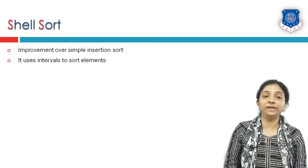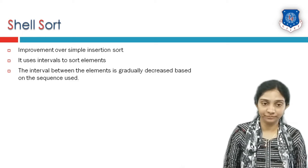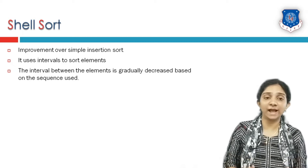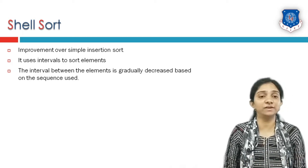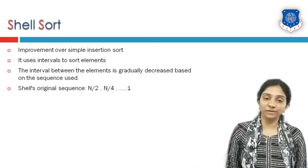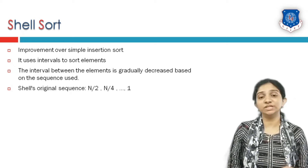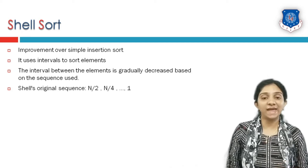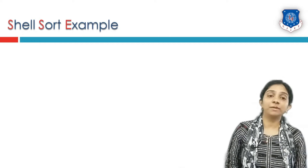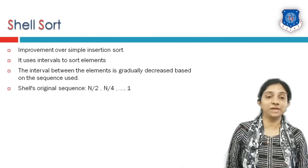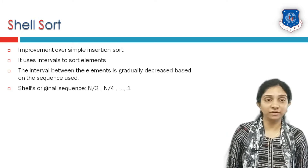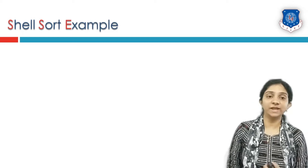Shell sort uses intervals between elements to sort them. The interval is gradually decreased so that at the end the complete list will be considered as one sequence of elements. Shell sort's original sequence is n/2, which is then reduced to n/4, then n/8, unless and until it becomes n/n which equals 1. Various other sequences do exist, but here we will consider only the original sequence to demonstrate its working.